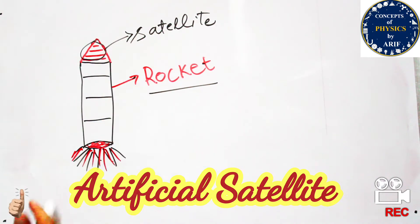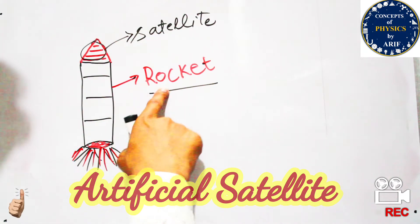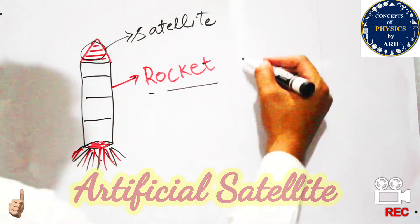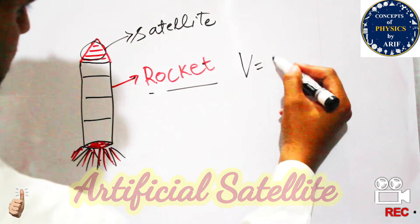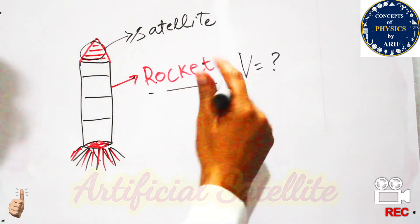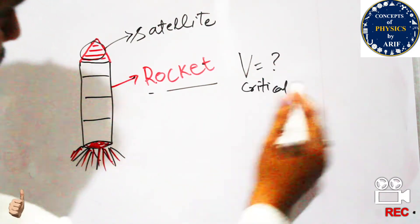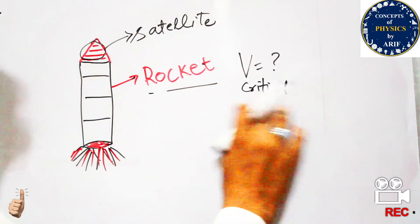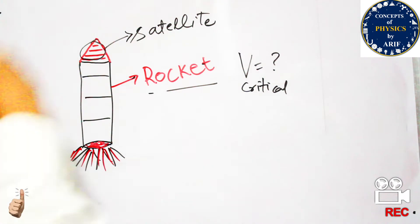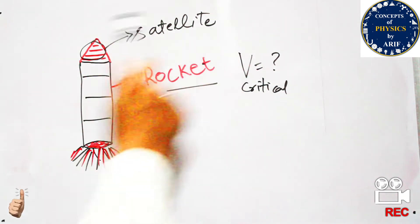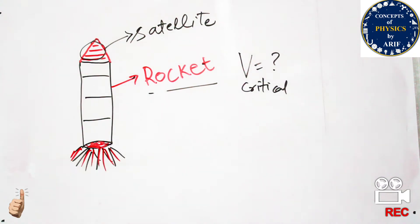When we ignite the rocket, after some time the satellite gains velocity. This velocity is known as critical velocity. If a body or object reaches the critical velocity, it can go into the earth's atmosphere and is then known as an artificial satellite.